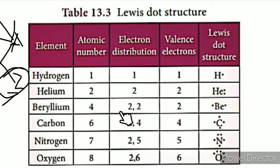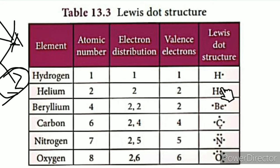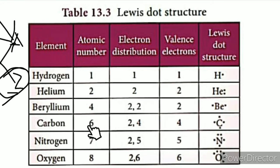Beryllium has atomic number 4 and 4 electrons. The first orbit (K) holds 2, leaving 2 in the outer orbit, so the valence electron count is 2 — shown as 2 dots. Nitrogen has atomic number 7 and 7 electrons. The first orbit holds 2, leaving 5 as the valence electrons — shown as 5 dots around the nitrogen symbol.